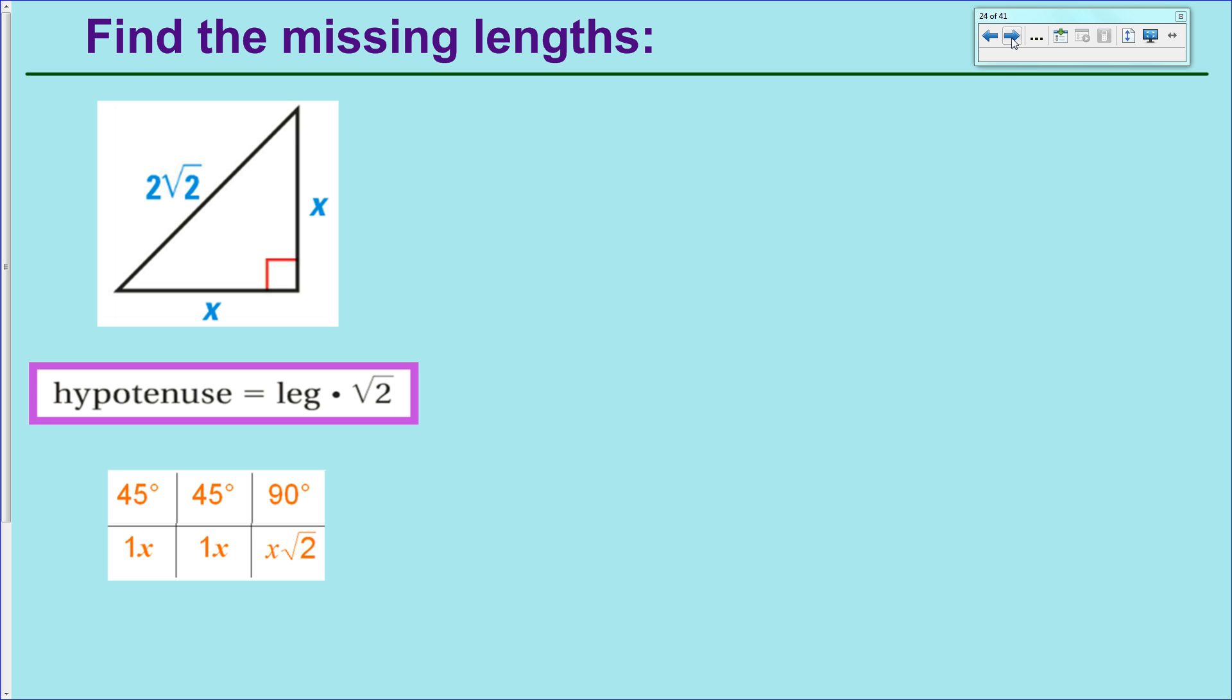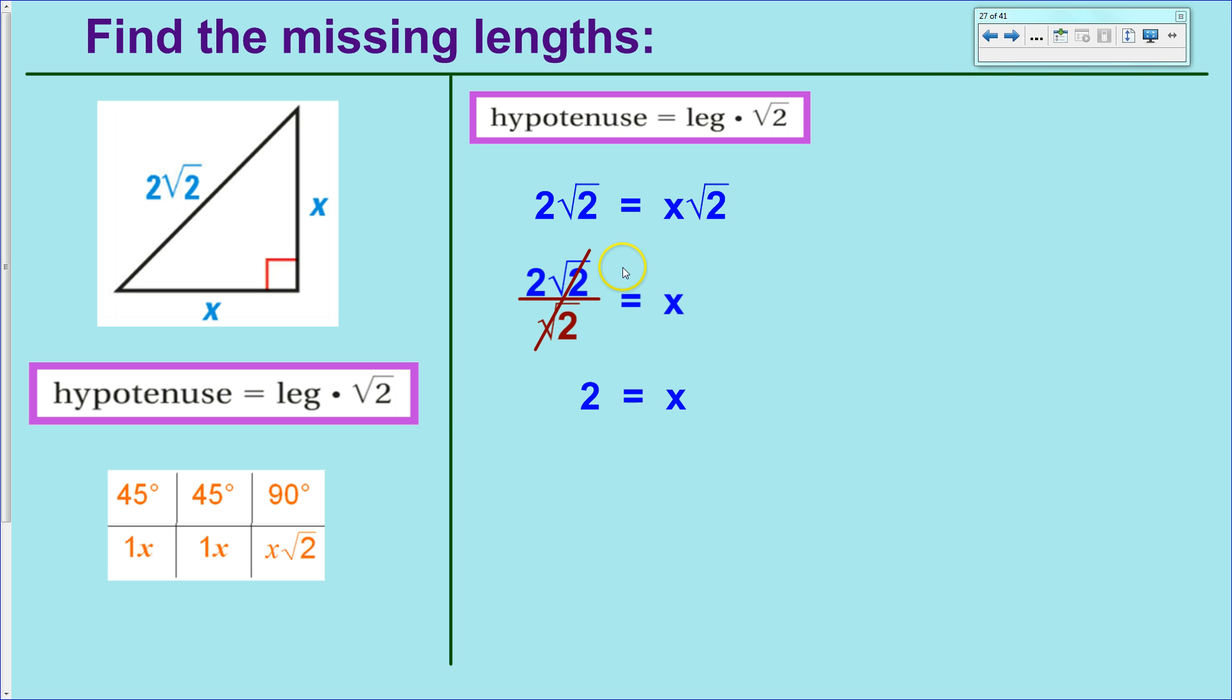You can convince yourself of that through the base angles theorem and triangle sum theorem. So, pull up all your information on a 45, 45, 90 right triangle. We'd like to find x. Again, this is one that you could use the Pythagorean theorem on. It gets a little messy. I'm going to show you that this is just slightly easier. So, the first way I'm going to do it is using the equation. Plug in everything I know and everything that I don't know. Leave alone. So, hypotenuse, 2 times the square root of 2, leg, don't know, x times the square root of 2. Set it up. You want x all by itself, so divide by the square root of 2. You divide by the square root of 2. Not only does it cancel on this side, but it cancels on this side to get plain old x equals 2.